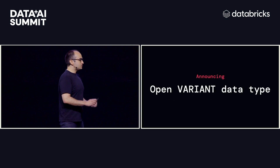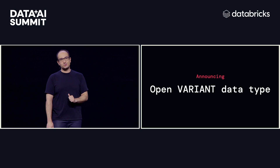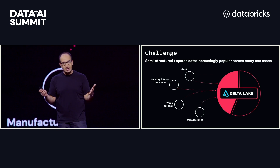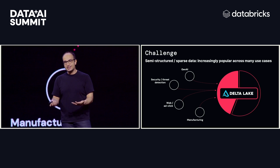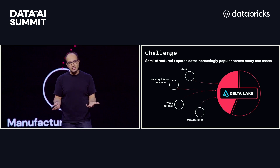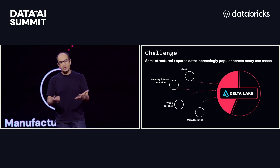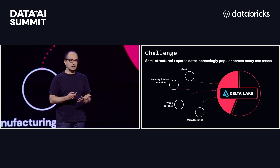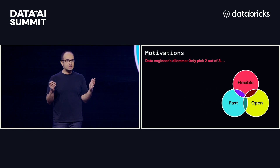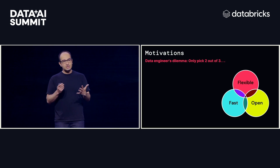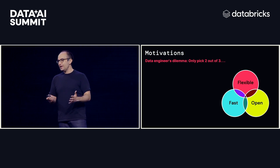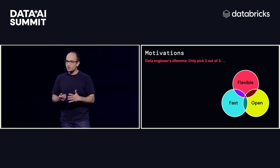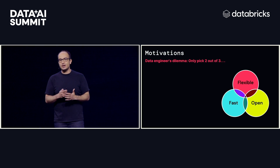Next: open variant data type. And this one's really important — that first word, 'open,' is really exciting. In this world of AI, you have more and more semi-structured text data, alternative data sources, all of this coming into the lake house. We wanted to come up with a way to make it easier for people to store and work with these types of data in Delta. Usually when you're stuck with semi-structured data, most data engineers have to make a compromise — none of us like compromises. It's about being open, flexible, or fast, and often they'd only be able to pick two out of these three.